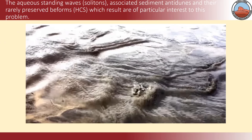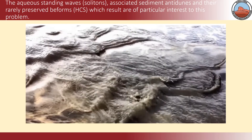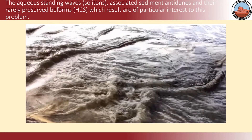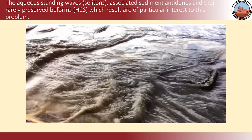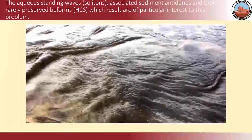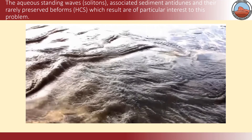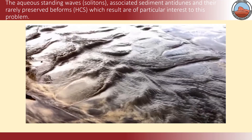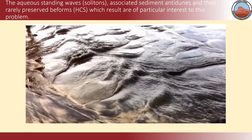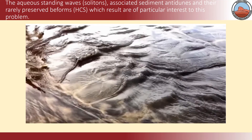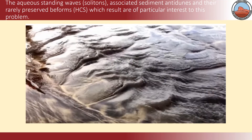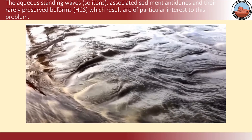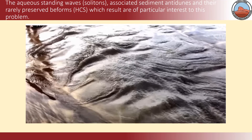This led us into the strange phenomena known as solitary waves. Here you can see water flowing from the southeast to the northwest. Those are anti-dunes. And above these anti-dunes are solitons. This may result in a particular bed form known as hummocky cross-stratification cells.